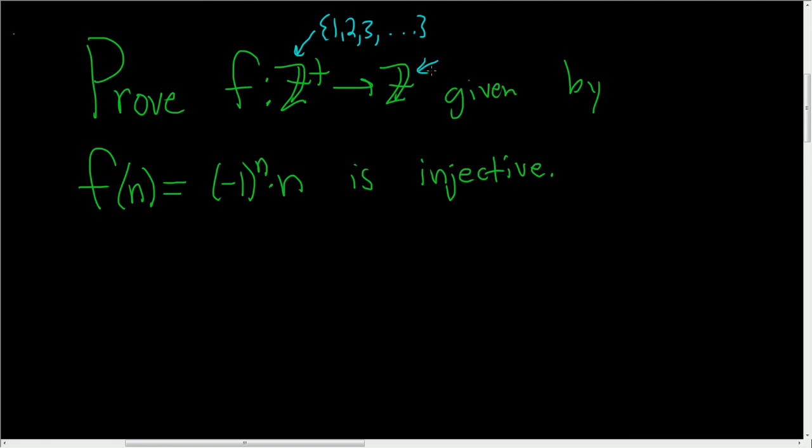And this here is simply all integers. So negative two, negative one, zero, one, two, etc.